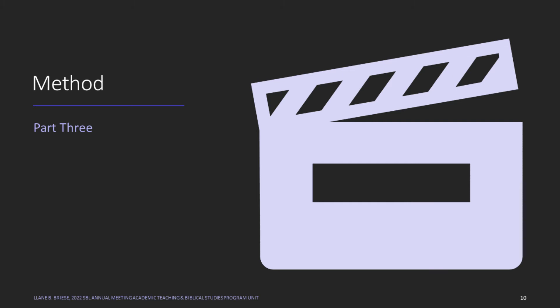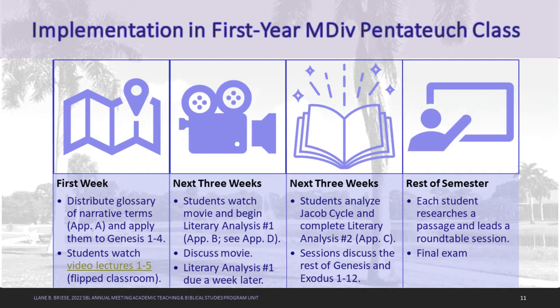I use a Venn diagram: the world of the text, the world of the movie, and the world my students are living in — looking for the area where all three overlap. I used this strategy in the first half of the spring semester, about seven weeks. On the first day of class, I distributed to all students a glossary of narrative terms covering point of view, portrayal of time, different kinds of characters, and plot analysis.